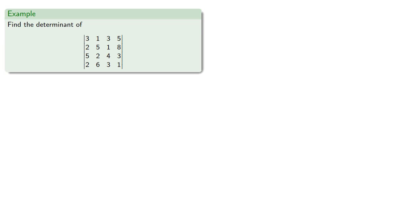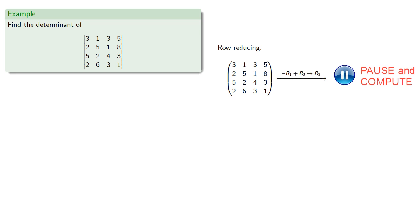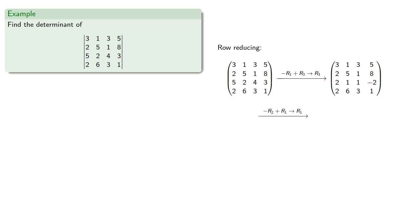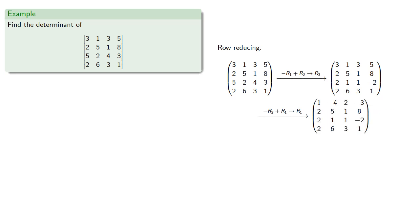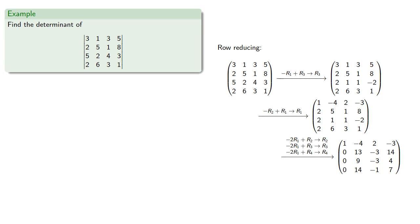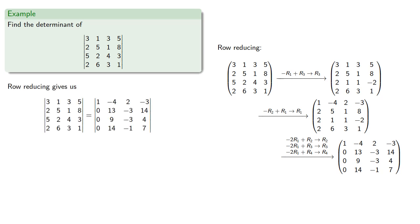We can do the same thing even for larger matrices. Let's find the determinant of a 4×4 matrix by row reducing. The leading coefficient in the first row is smaller than that in the third row, so we subtract the first row from the third. The leading coefficient in the first row then becomes the greatest in the column, so we subtract the second row from the first, giving a pivot of 1, which we use to clear out the entries below the pivot. Since we didn't switch any rows or multiply a row by a constant, the determinant is unchanged.